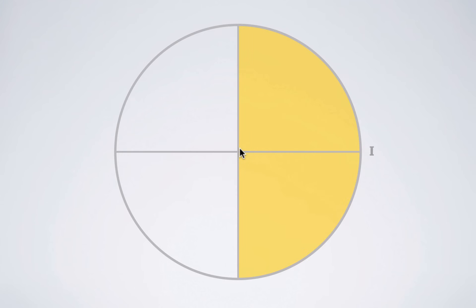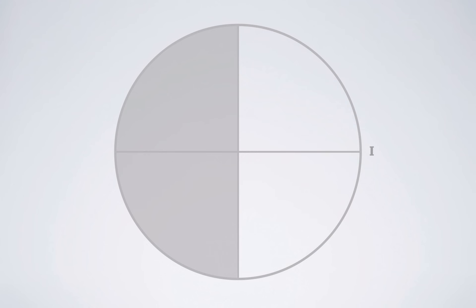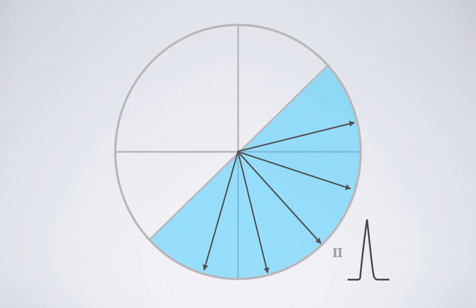If the cardiac axis points in the direction of a certain lead — for example lead one — the deflection in that lead will be mainly positive. When the vector points away from that lead, we get a negative deflection. The same applies to lead two: if the main vector points toward lead two, then lead two will be mainly positive. Taking these two pieces of information together, we can determine the axis from the combination of lead one and lead two deflections.